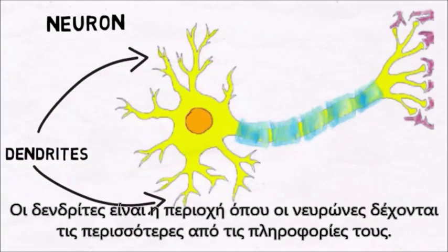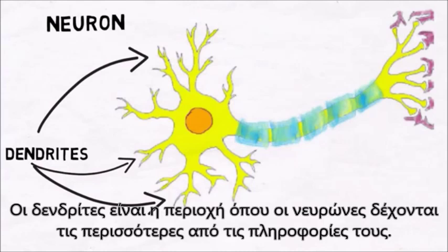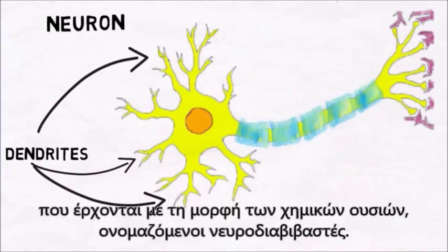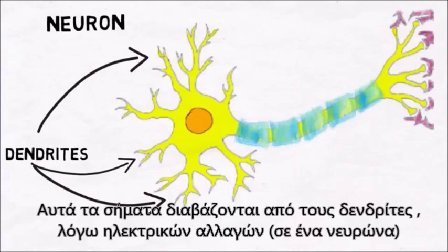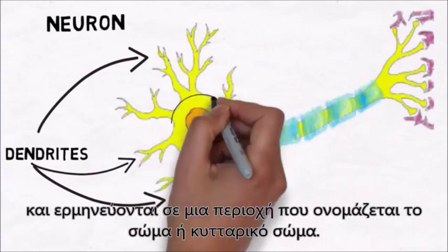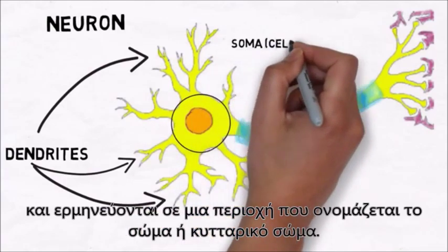Dendrites are the area where neurons receive most of their information. There are receptors on dendrites that are designed to pick up signals from other neurons that come in the form of chemicals called neurotransmitters. Those signals picked up by dendrites cause electrical changes in a neuron that are interpreted in an area called the soma, or the cell body.